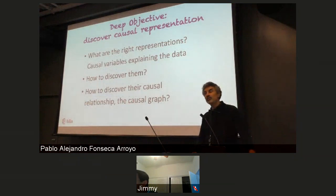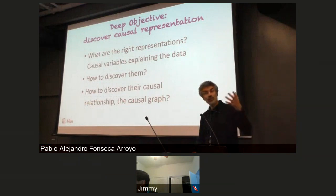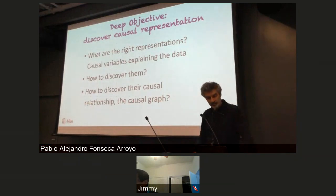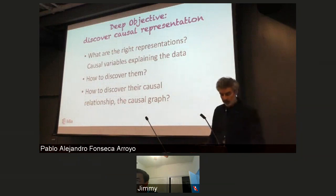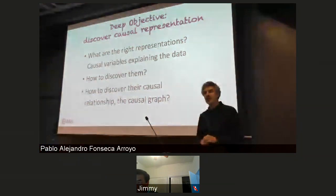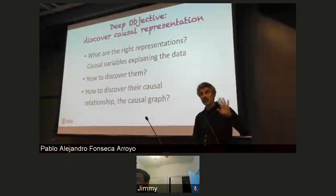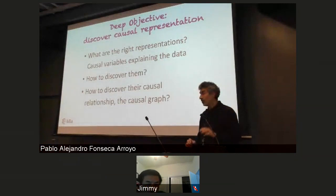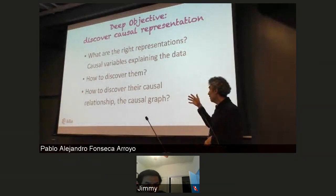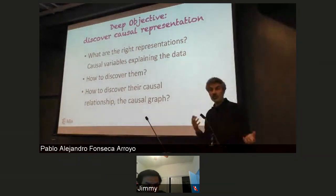Often, language refers to concepts that have to do with causality, about objects, think about agents, think about actions, and so on. So part of what I'm trying to do here has to do with how do we expand the ability of deep learning to discover causal variables, and discover which is cause and which is effect, and how they relate to each other.